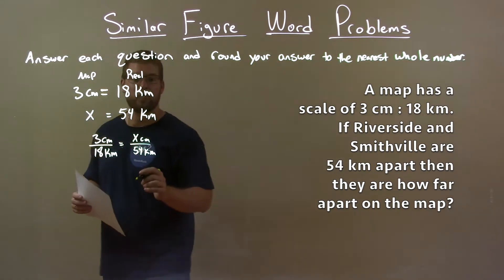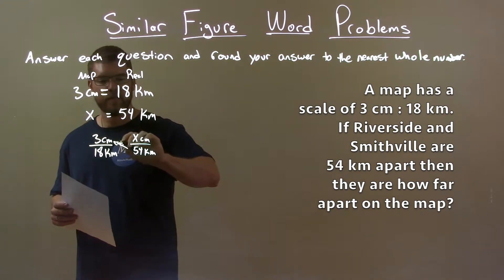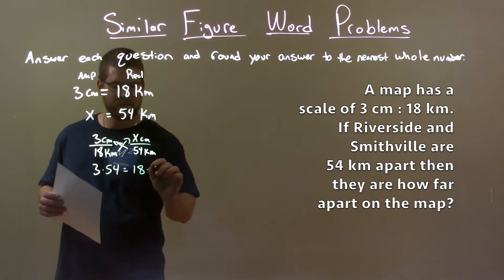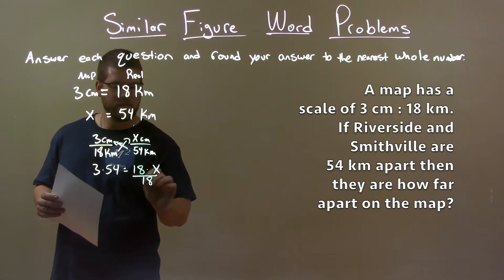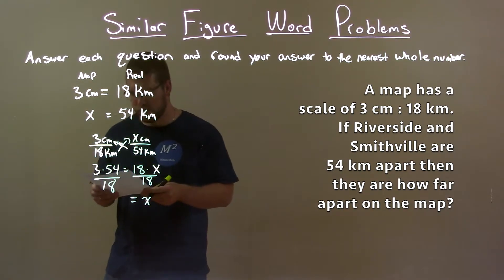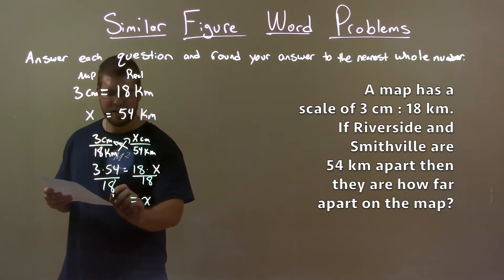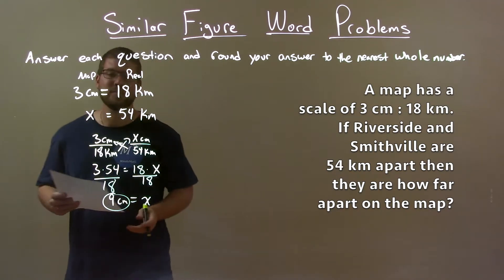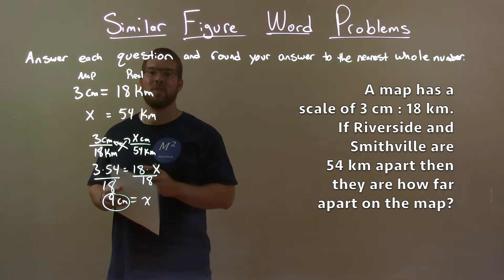Now let's solve for x. We cross multiply: 3 times 54 equals 18 times x. Then we divide both sides by 18. This gives us x by itself. 3 times 54 divided by 18 is 9. That's for the map, so our units are centimeters. Our final answer is 9 centimeters on the map.